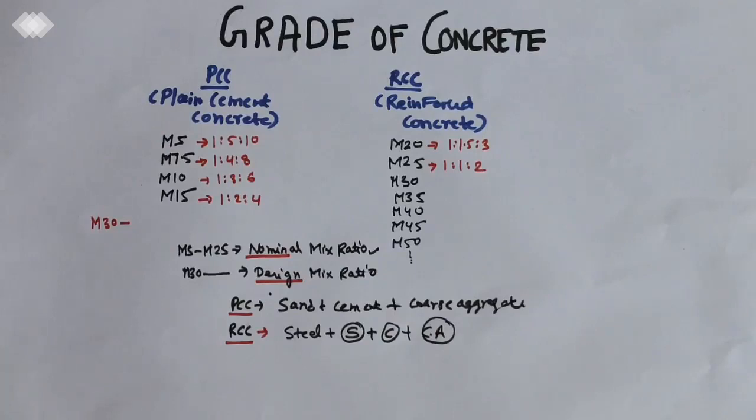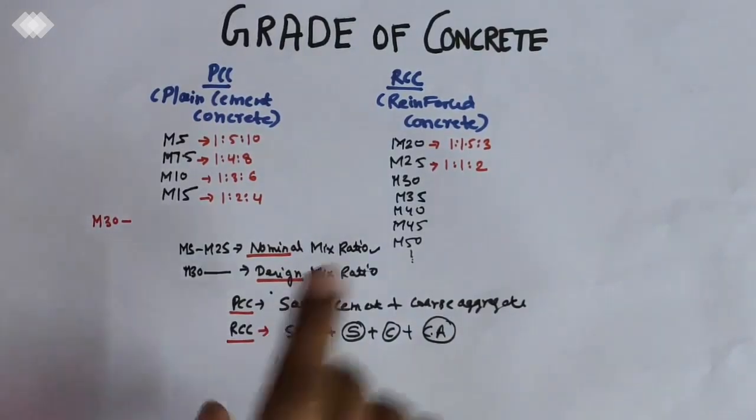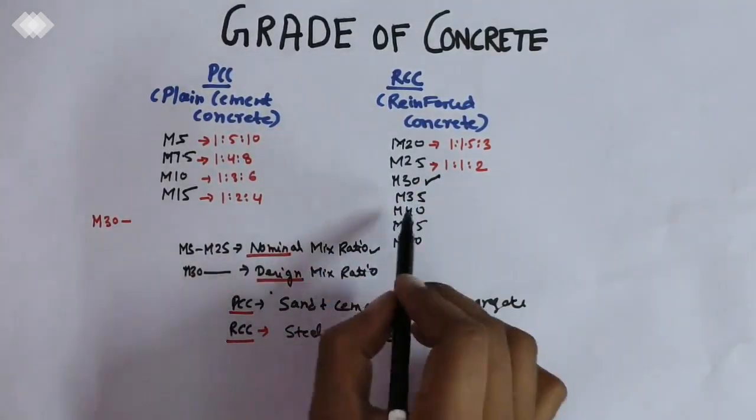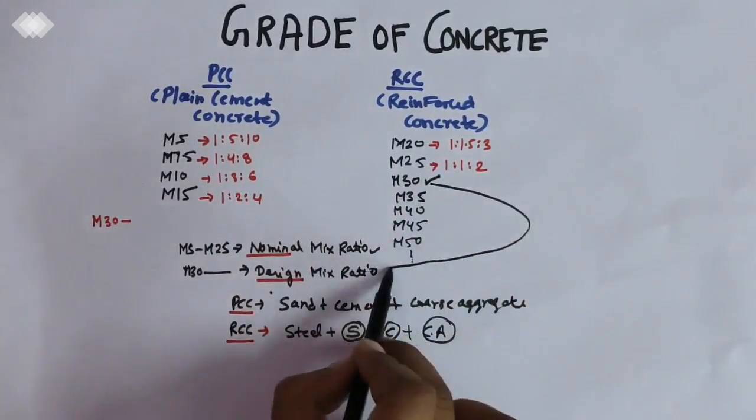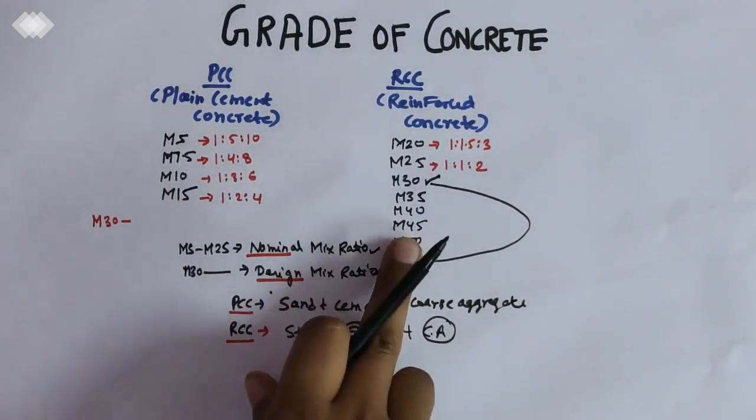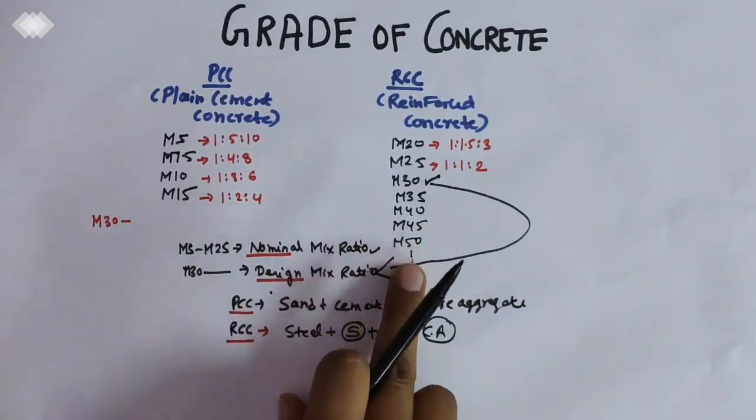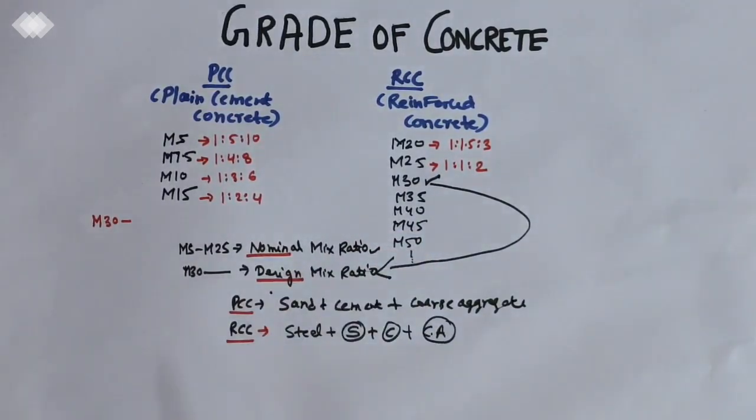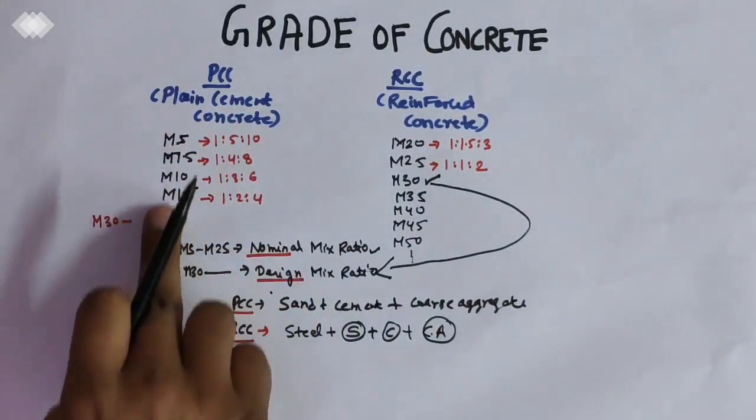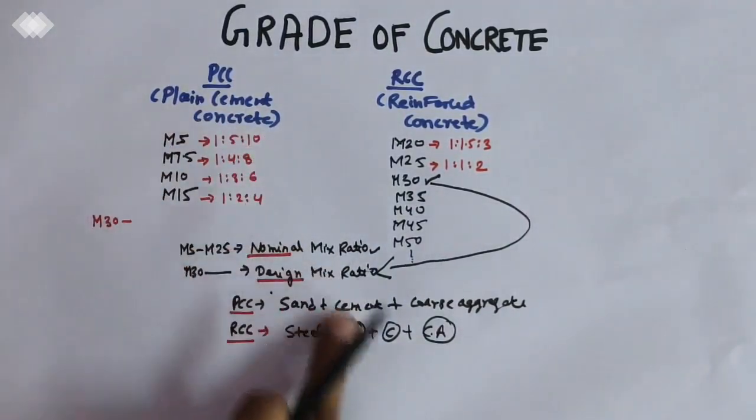If you want M30 mixed grade of design, we will use design mix ratio for designing M30, M35, M40, M45, M50, and so on. We will not use the nominal mix ratio in which the respective grade of concrete and their ratios are fixed.